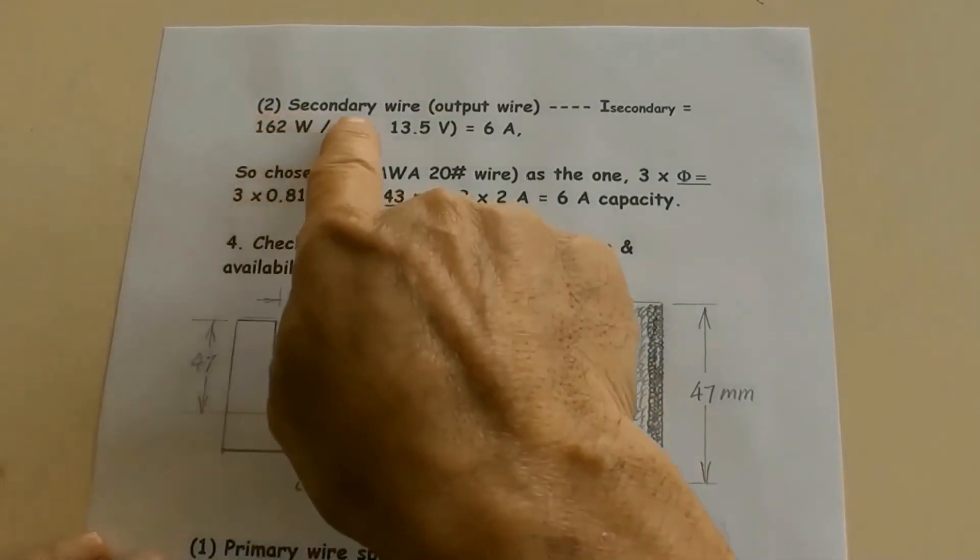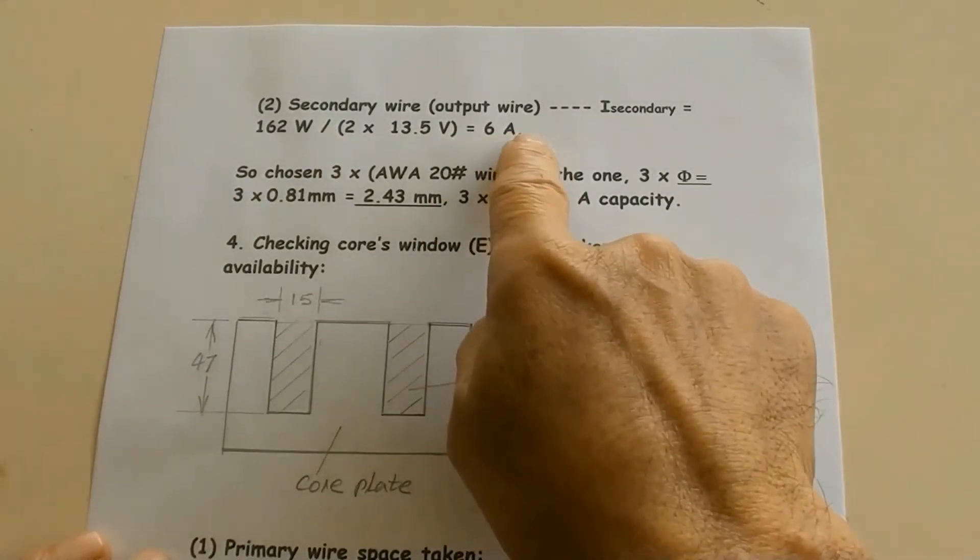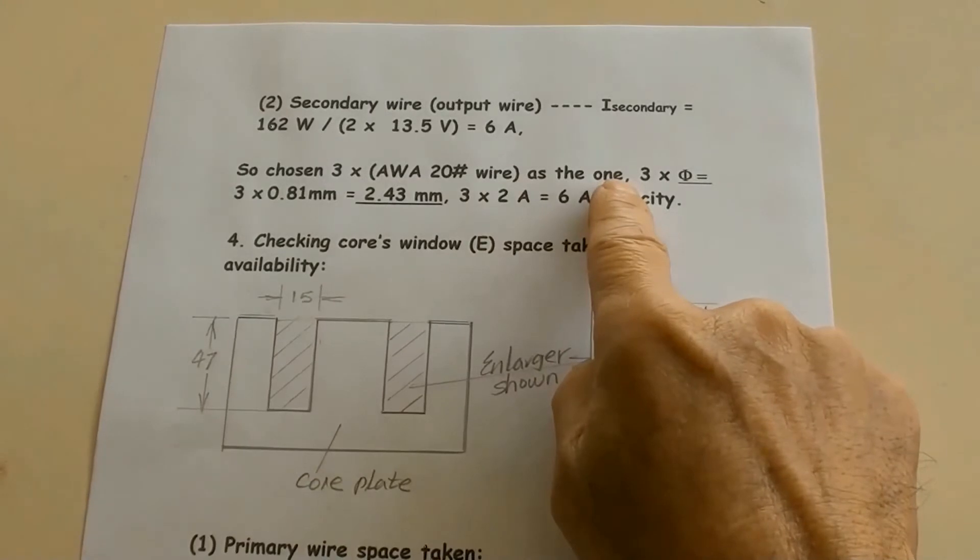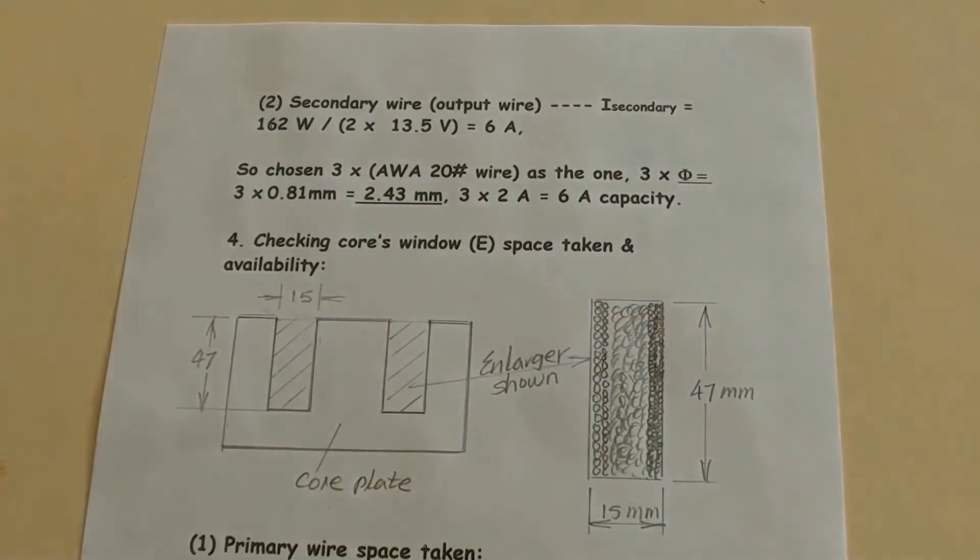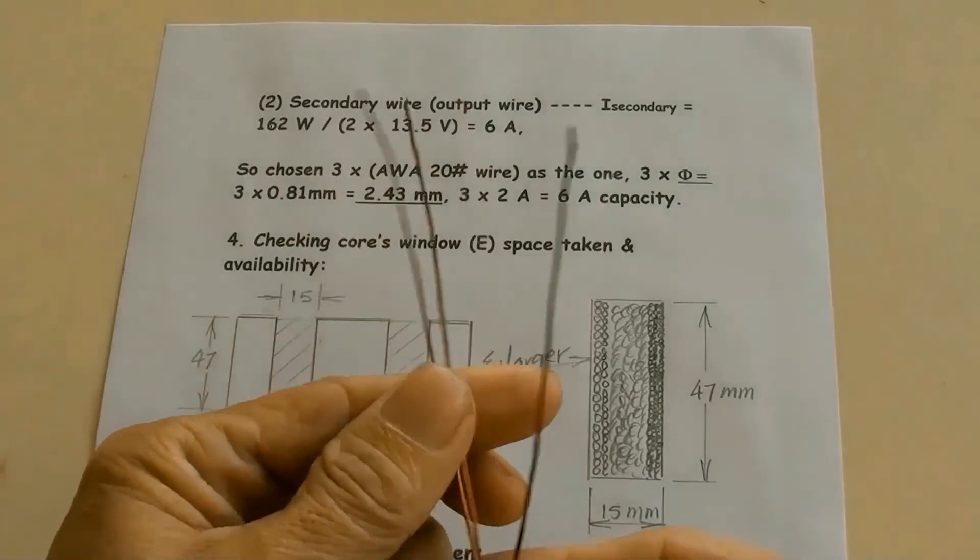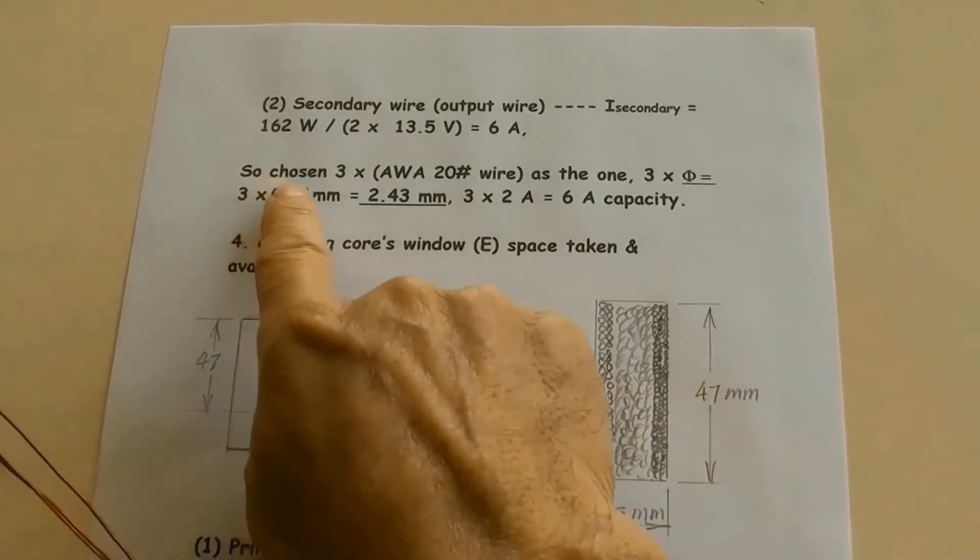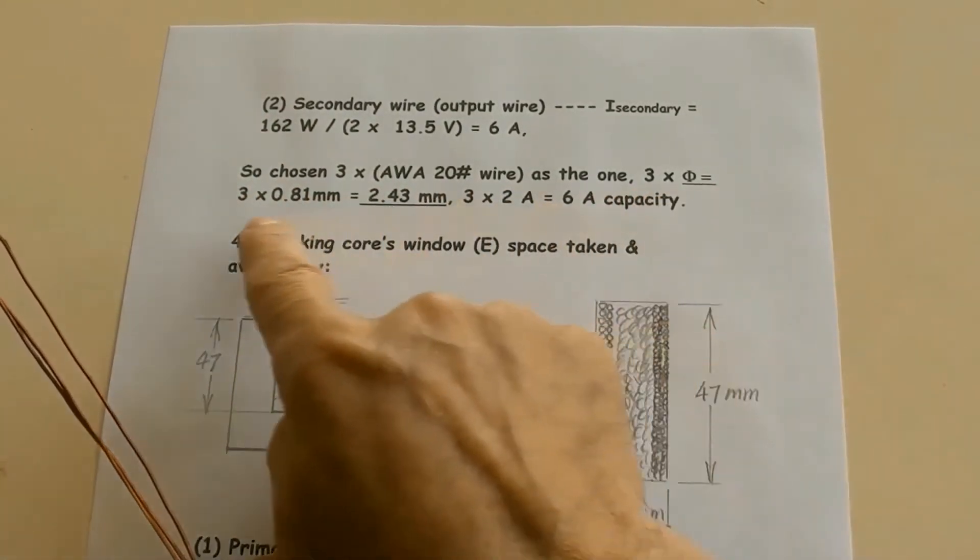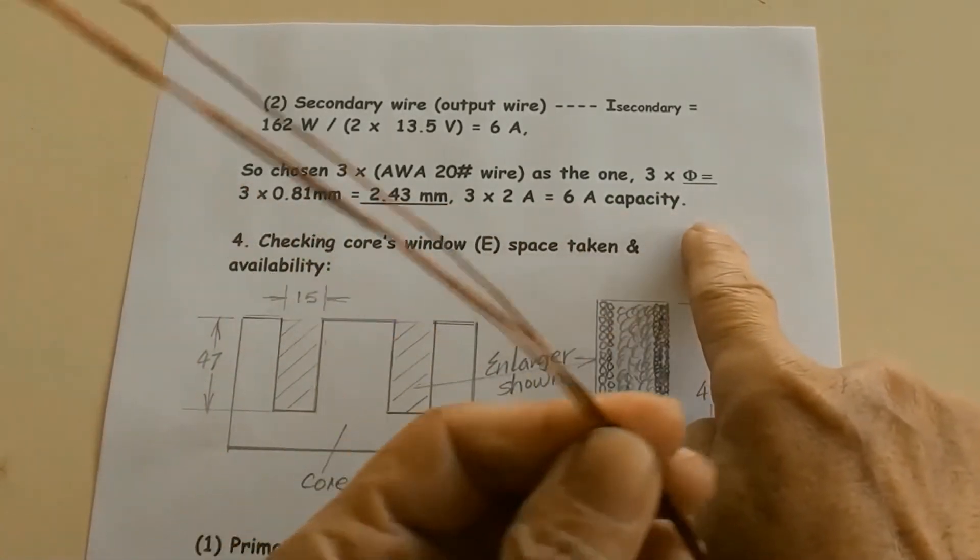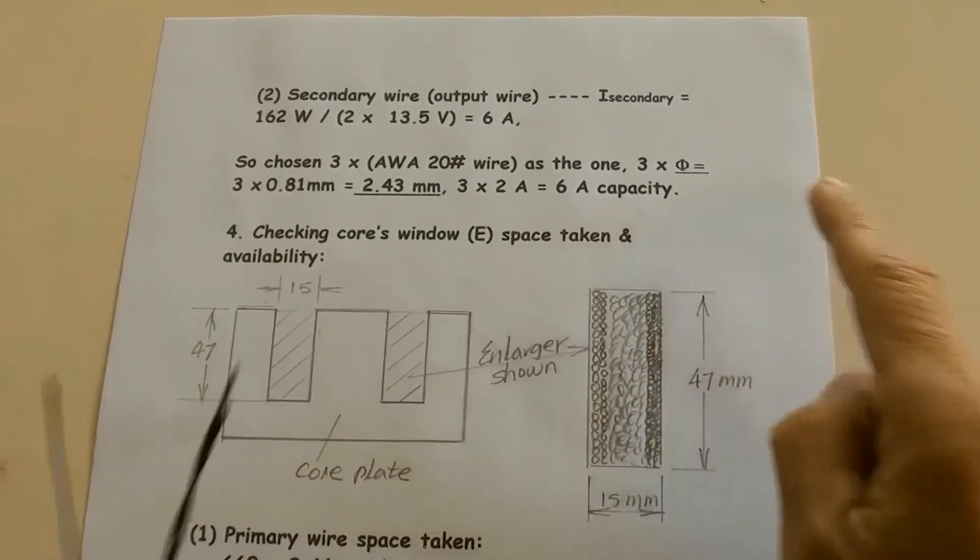Secondary wire: A secondary equals 162W over 2 times 13.5V equals 6A. So chosen three AWG23 wire as the one. These are three wires same as the ones to be used. The combination diameter is 3 times 0.81mm equals 2.43mm, 3 times 2A equals 6A capacity.